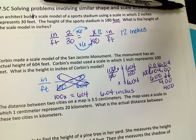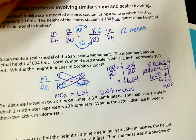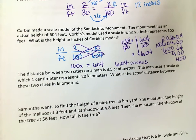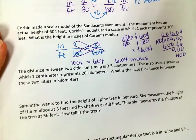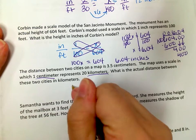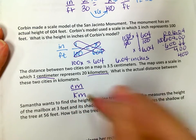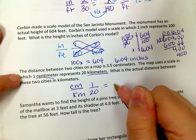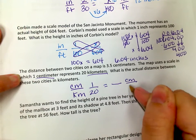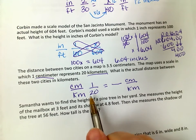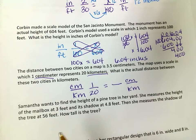The distance between two cities on a map is 3.5 centimeters. The map uses a scale in which one centimeter represents 20 kilometers. What is the actual distance between these two cities in kilometers? The scale is 1 centimeter to 20 kilometers, and the map distance is 3.5 centimeters.